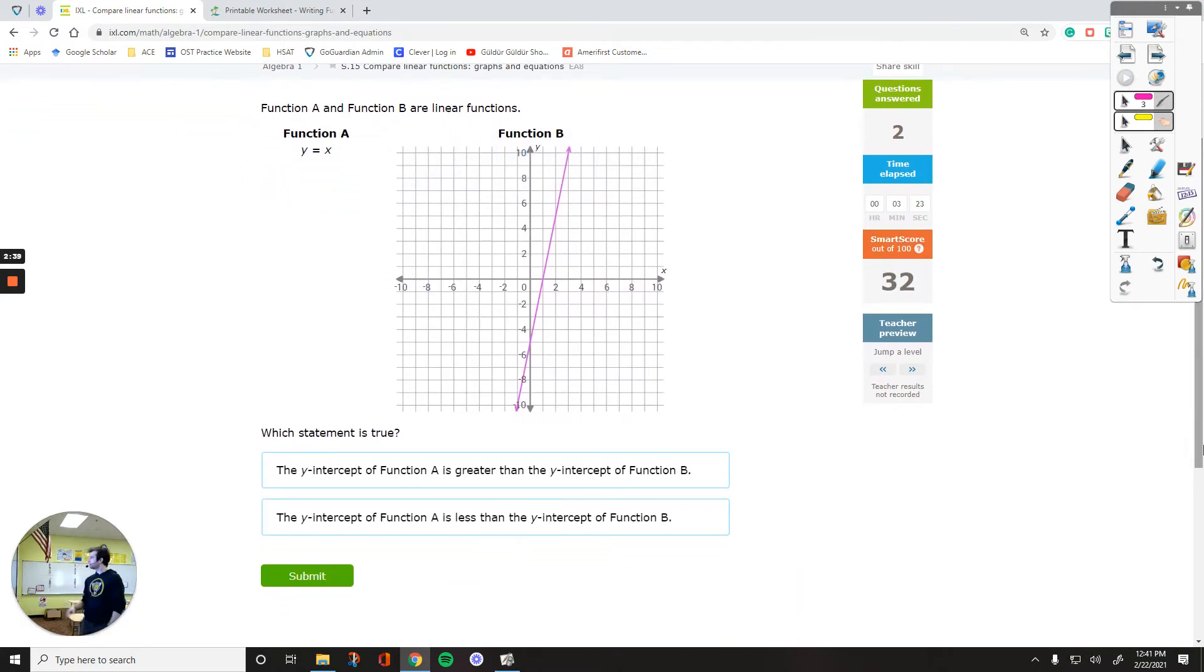Once you skip a level, when you are around 32 points on IXL, you're going to start having these y-intercept questions. So the y-intercept is pretty simple on the graph. It's what you see on the y-axis, the point that you see on the y-axis.